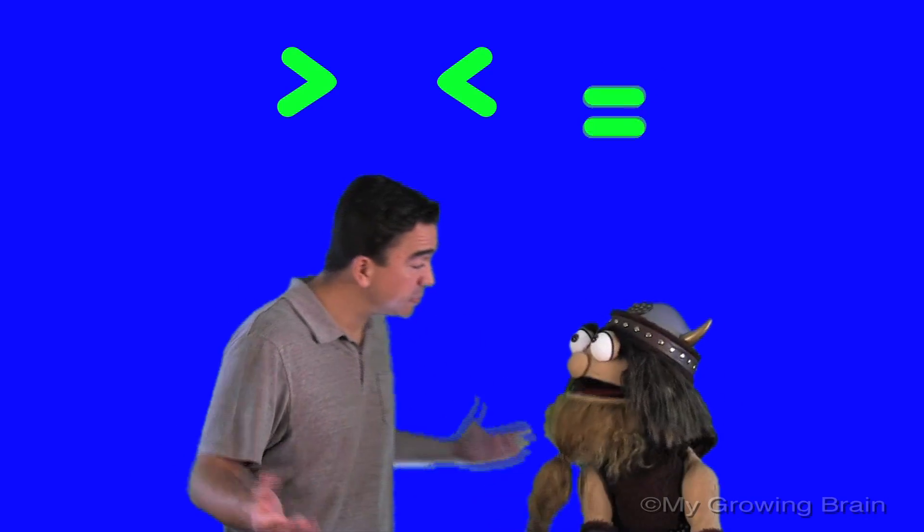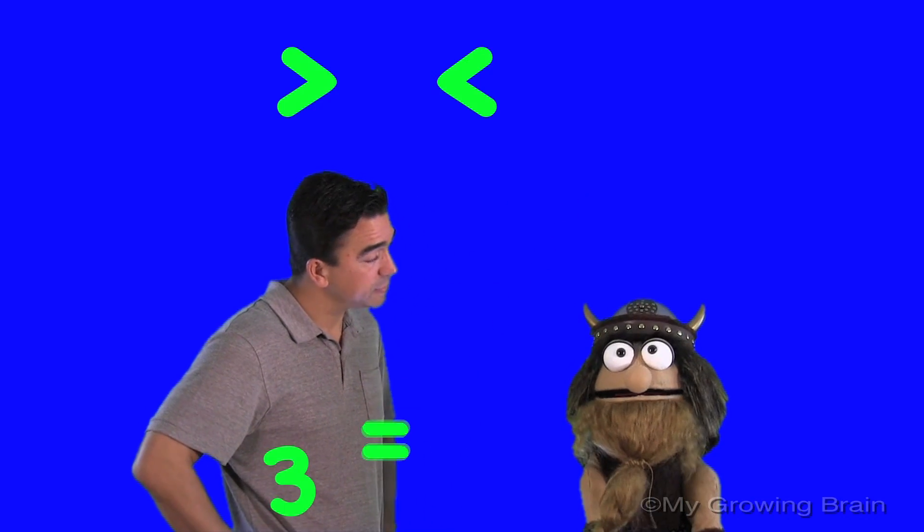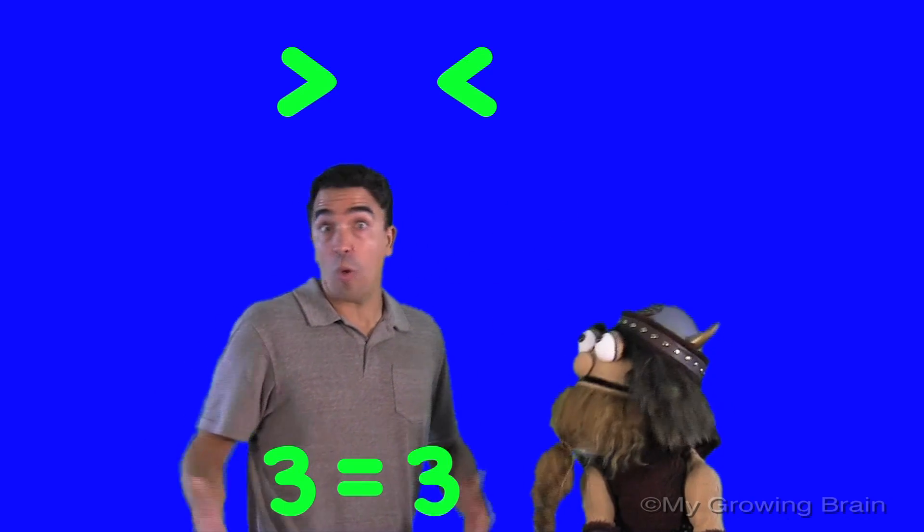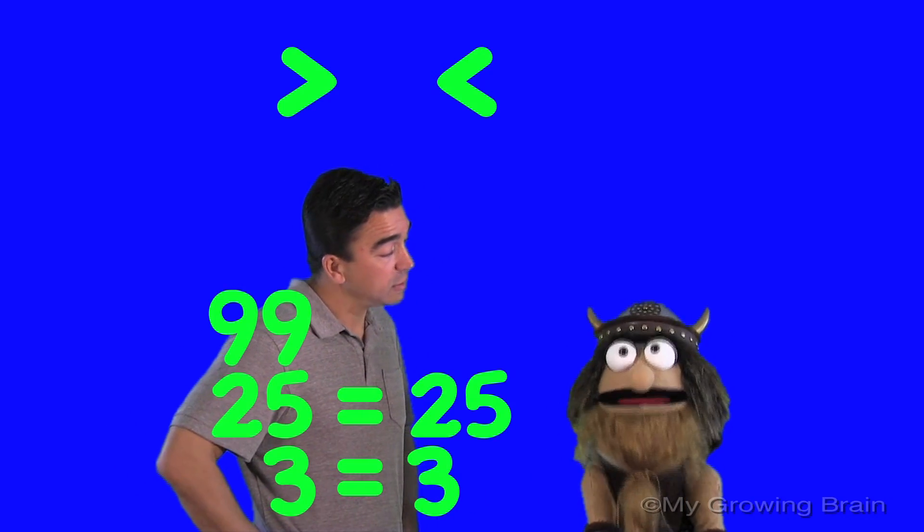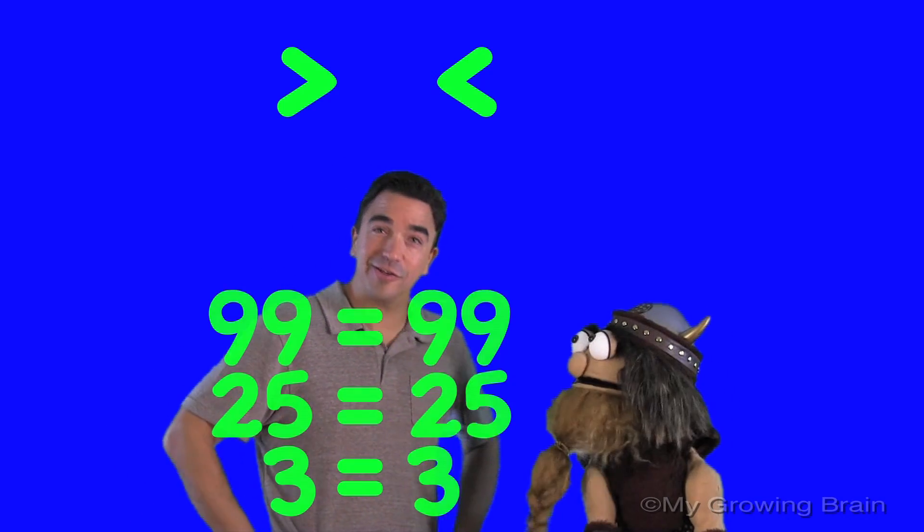Can you give us an example? Sure, Coach Mike. How about three is equal to three? Or twenty-five is equal to twenty-five. Or ninety-nine is equal to ninety-nine. Good job, Oli.